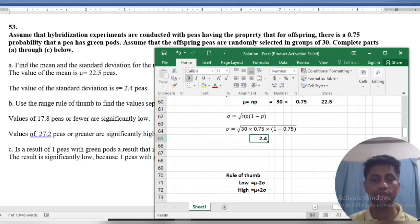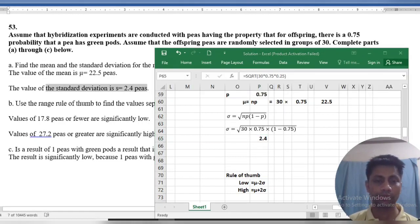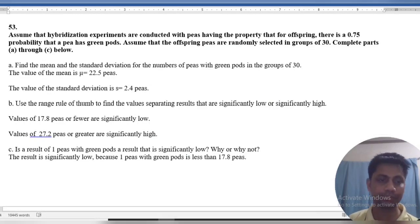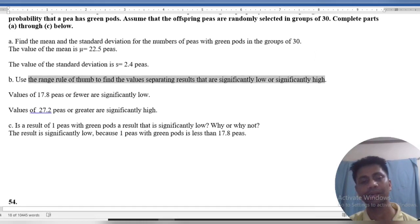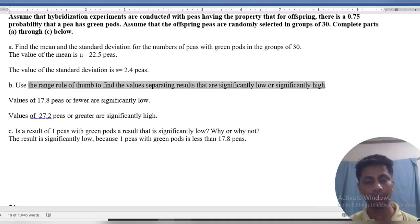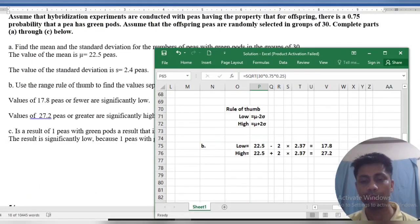Part B: Use the range rule of thumb to find values separating results that are significantly low and significantly high. We know that the rule of thumb is equal to mu minus 2 sigma and mu plus 2 sigma.